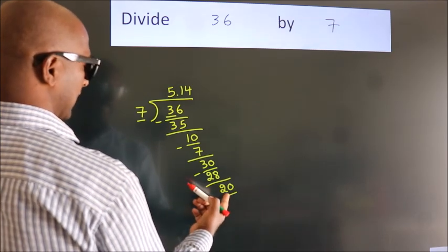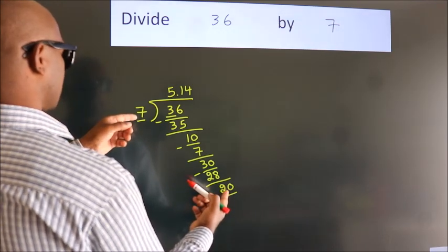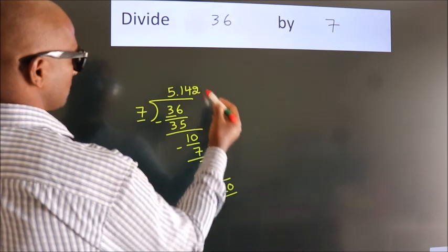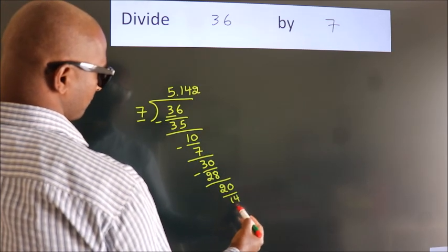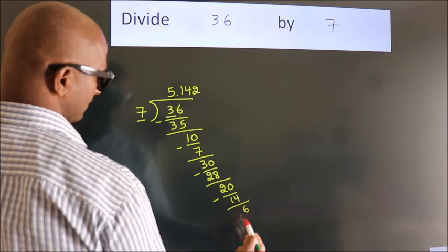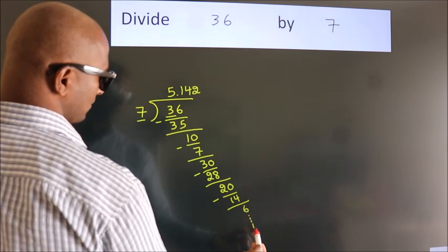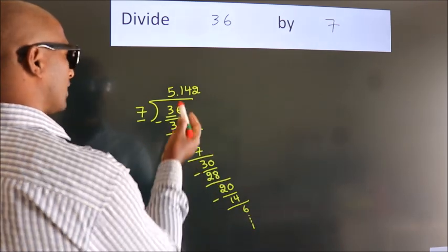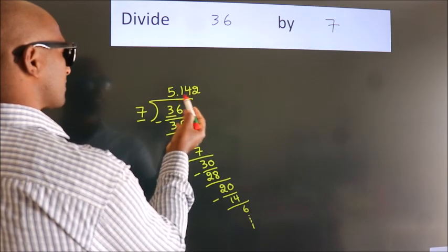A number close to 20 in 7 table is 7 twos, 14. Now, we subtract. We get 6. And the division continues. It is enough if we do up to 3 decimal places.